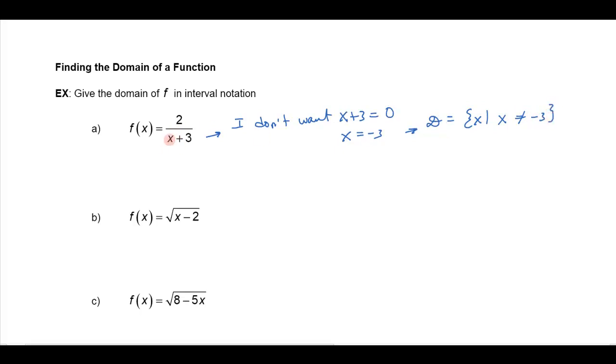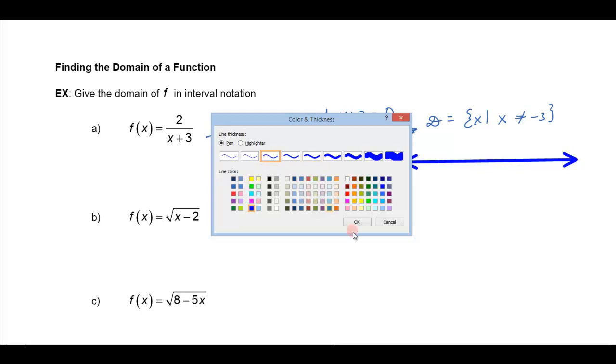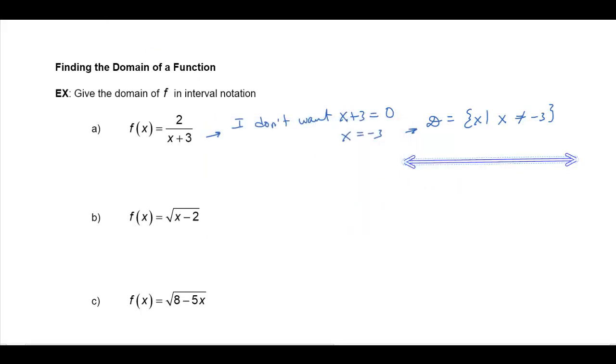And obviously if I plug negative three in over here, I'm going to get two divided by zero and that would be undefined. Now it did ask us to give it in interval notation. So in this case, if here's my number line here, then I want my domain to be all the numbers except negative three. So I'll draw negative three here and it can be anything except that point. So it could be anything smaller than negative three or it could be anything bigger than negative three as well.